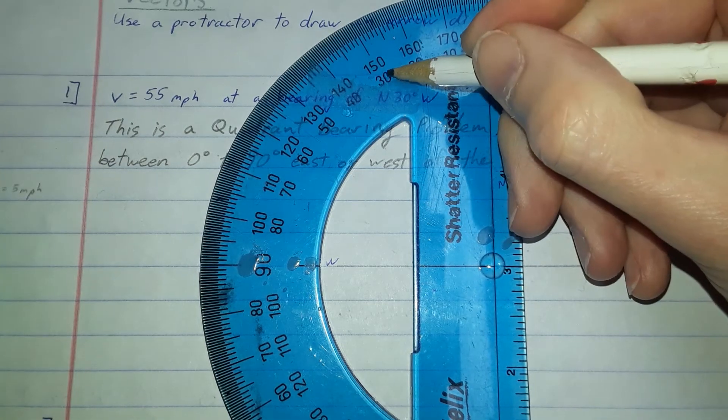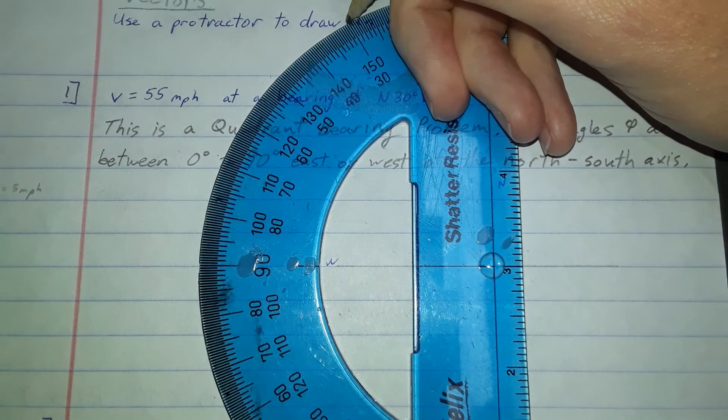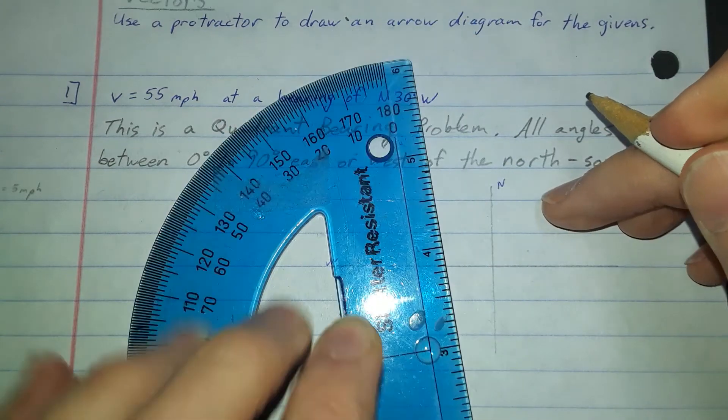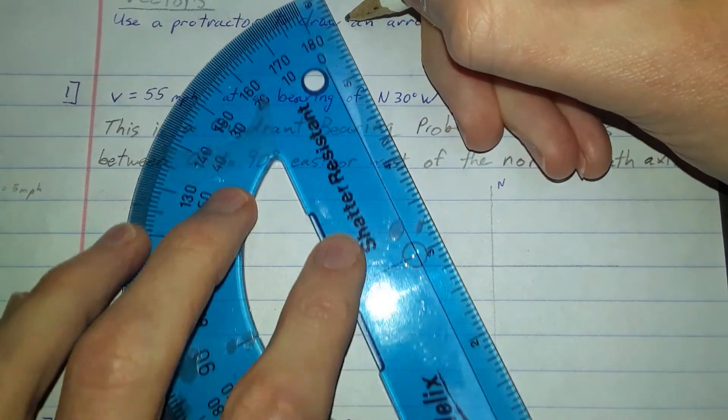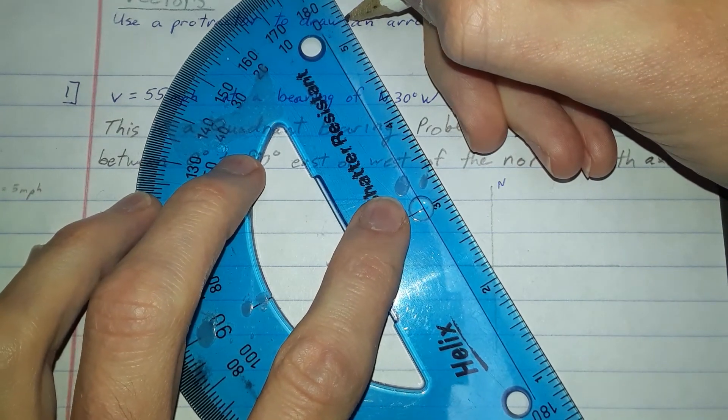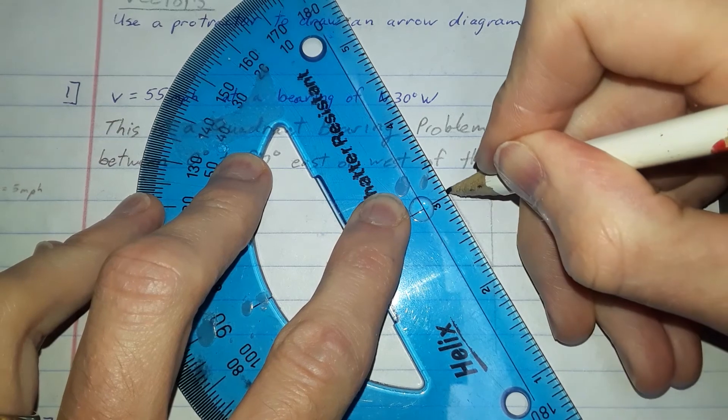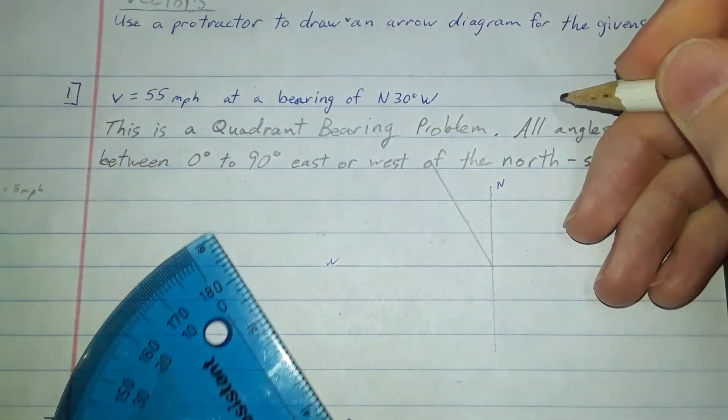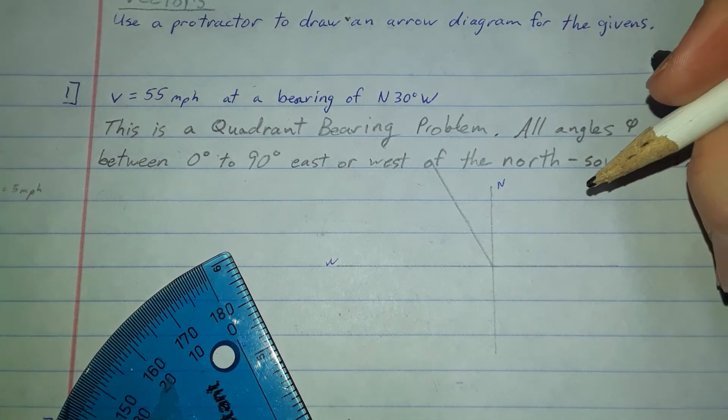As I move this direction, I see 30 degrees is here. I'm going to make a little mark out here at 30 degrees. And then I'm going to use this bottom edge of the protractor as a straight edge. I'm going to connect that point to the origin. I'm drawing this arrow out here.